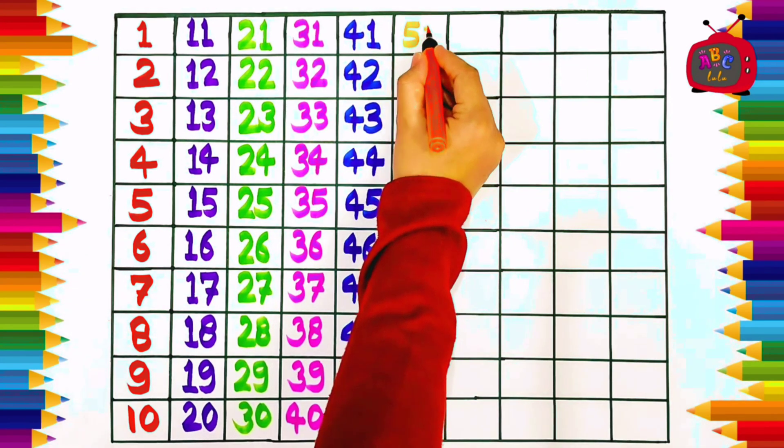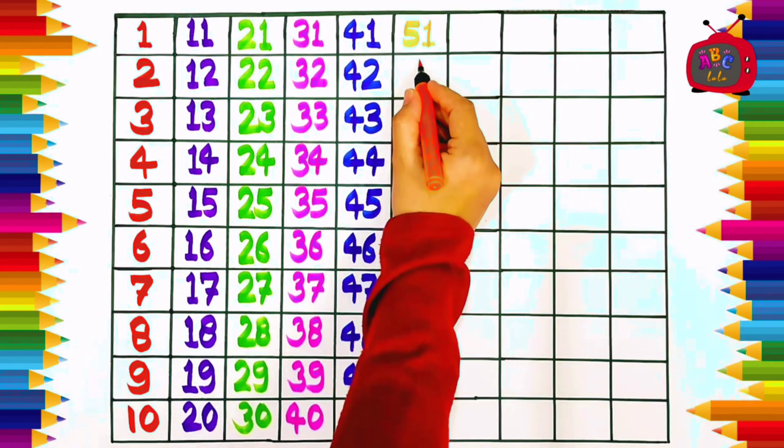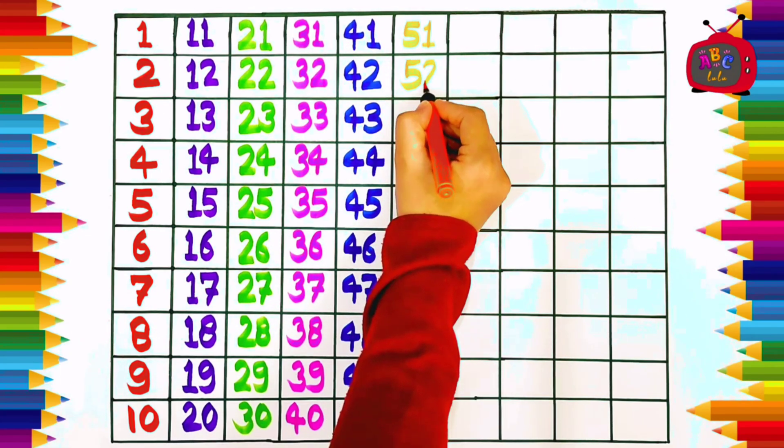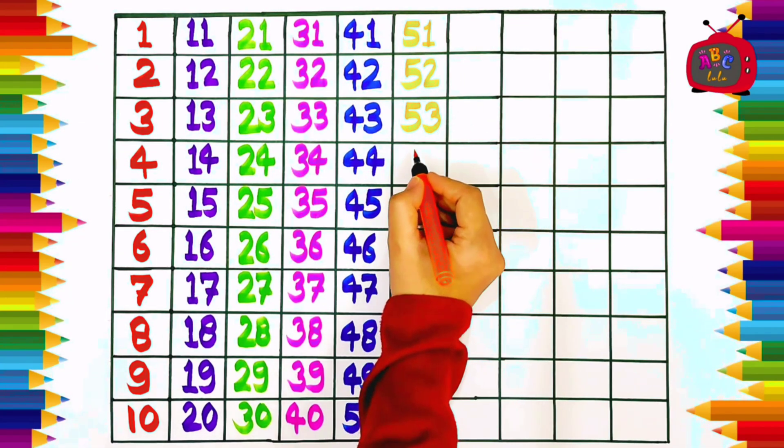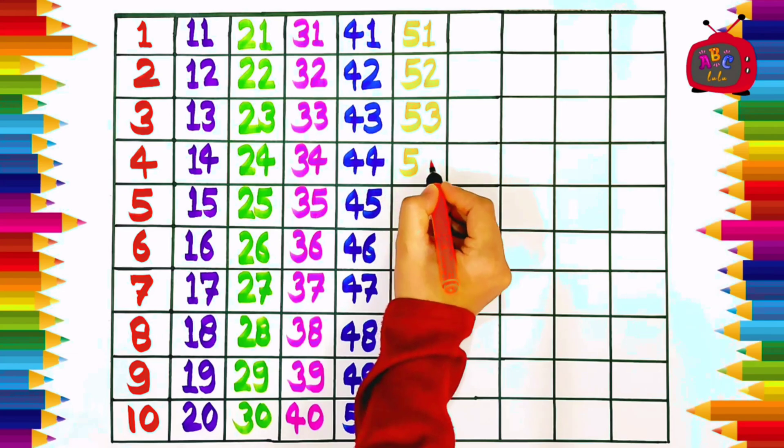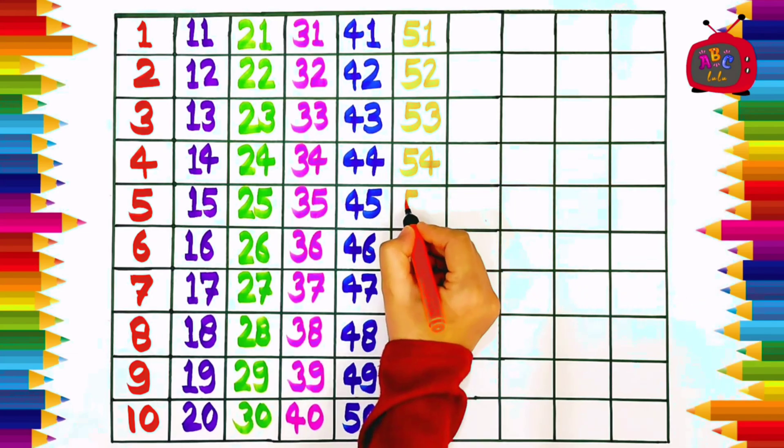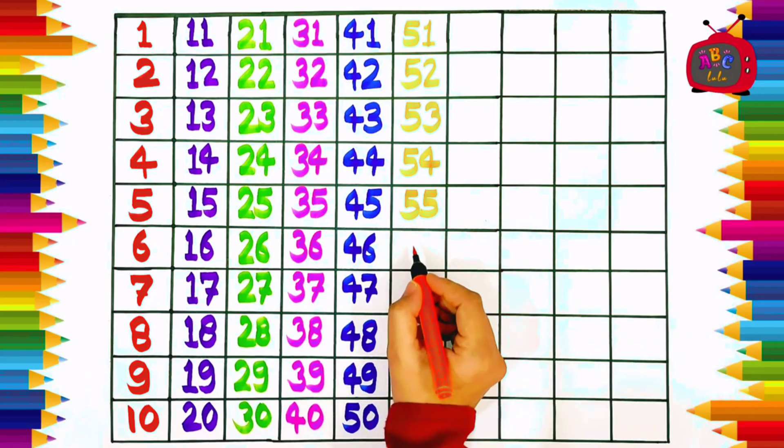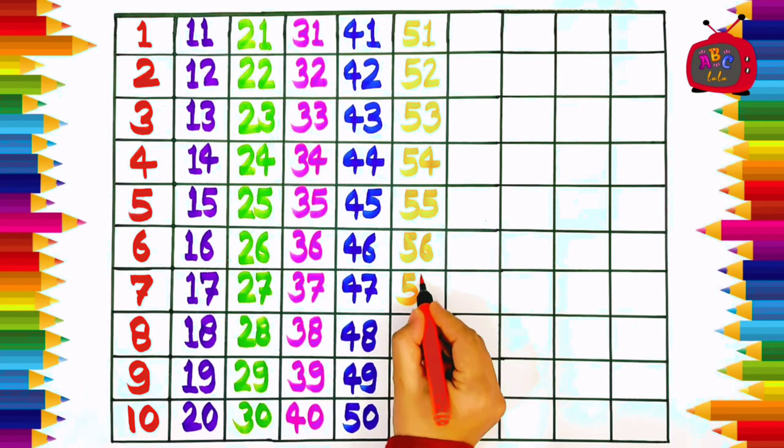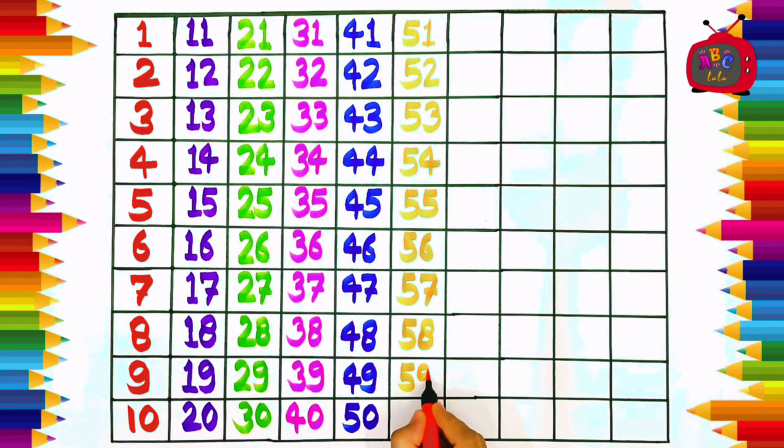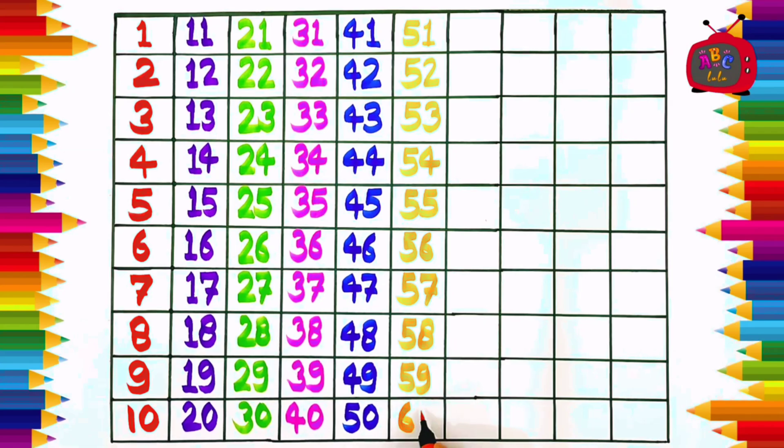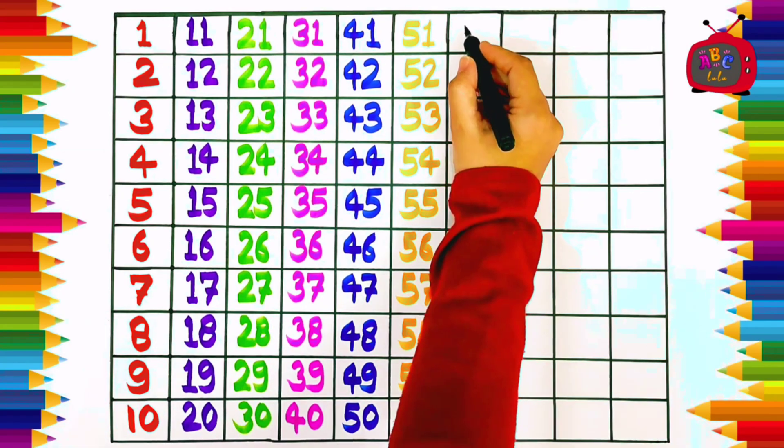Five one, fifty-one. Five two, fifty-two. Five three, fifty-three. Five four, fifty-four. Five five, fifty-five. Five six, fifty-six. Five seven, fifty-seven. Five eight, fifty-eight. Five nine, fifty-nine. Six zero, sixty.